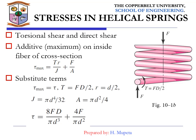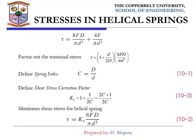From figure 10.1B, with torque T given as FD divided by 2 and force F, we have additive stresses on the inner fiber at cross sections. The torsional stress is given by torque multiplied by radius divided by J. Substituting, the total shear stress is given as 8FD divided by πd³ plus 4F divided by πd².